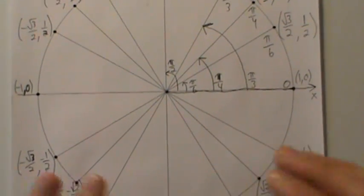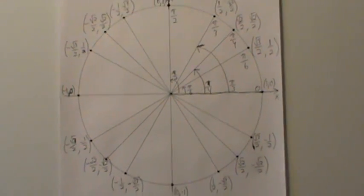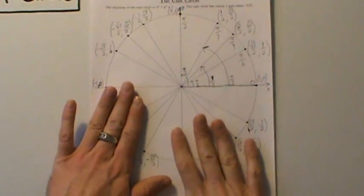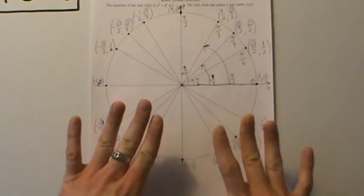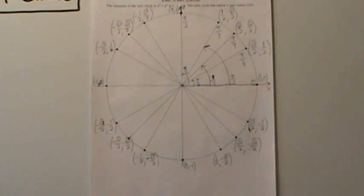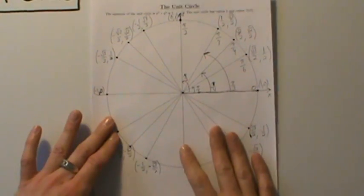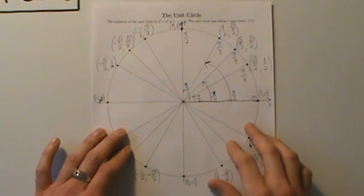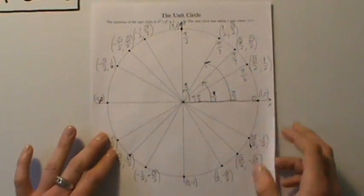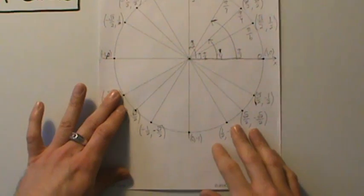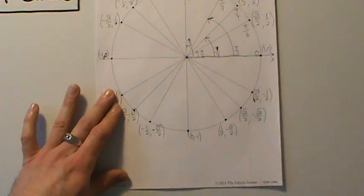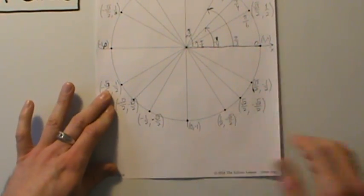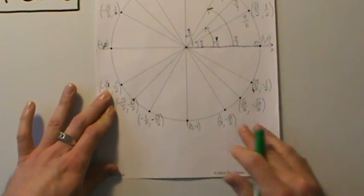If it doesn't seem simple now, don't worry — the more you practice, the easier it gets. It's a new concept and just takes some practice. Now let's talk about the angles. There are a few ways to think about it, and one method I like is to list out the angles.